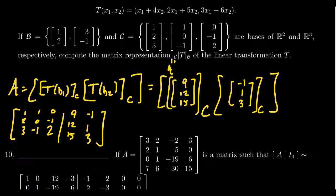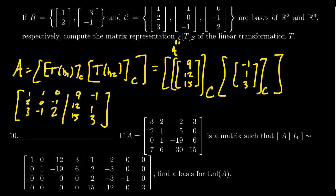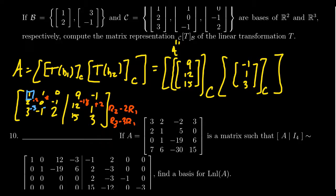We now row reduce this matrix. For a short response question, using a calculator is perfectly acceptable. I'll show the details here, though they aren't strictly necessary. To get zeros below the pivot in the first column, we take row 2 minus 2 times row 1, and row 3 minus 3 times row 1, giving us (-2, -2, 0, -18+2) for row 2 and (-3, -3, 0, -27+3) for row 3 in the augmented portion.